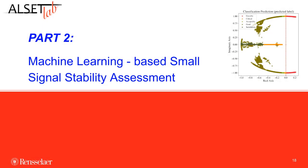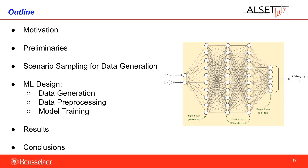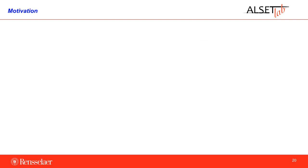Welcome to the second part of the tutorial called Machine Learning Based Small Signal Stability Assessment. The outline is as follows: first, motivation for why this work is important in the context of modern power systems; then some preliminaries regarding small signal stability; then one of the main contributions — the ad hoc Monte Carlo method for synthetic data generation; after this, how the massively generated data will be used for designing machine learning techniques, including data preprocessing and training setup; and finally, results of the different techniques using a proposed benchmark metric, followed by conclusions.